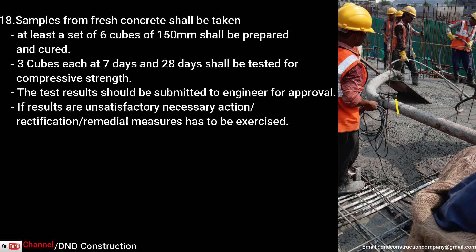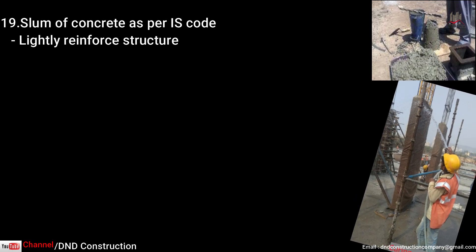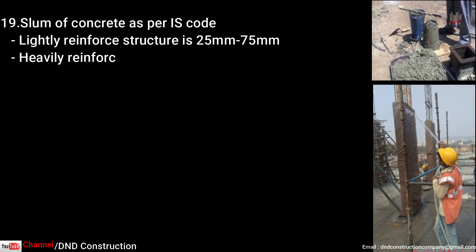Point nineteen is slump of concrete. Slump values describe the workability of fresh concrete. Generally for lightly reinforced structures we keep a value of 25 to 75 mm. For heavily reinforced structures, the value is 75 to 100 mm. However, it depends on site conditions.